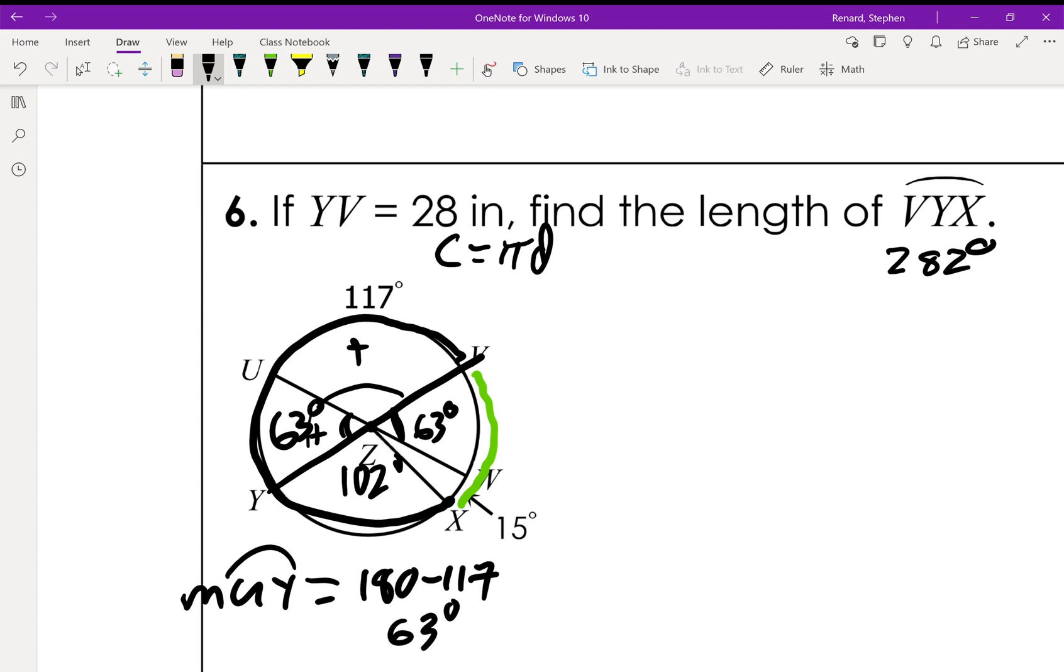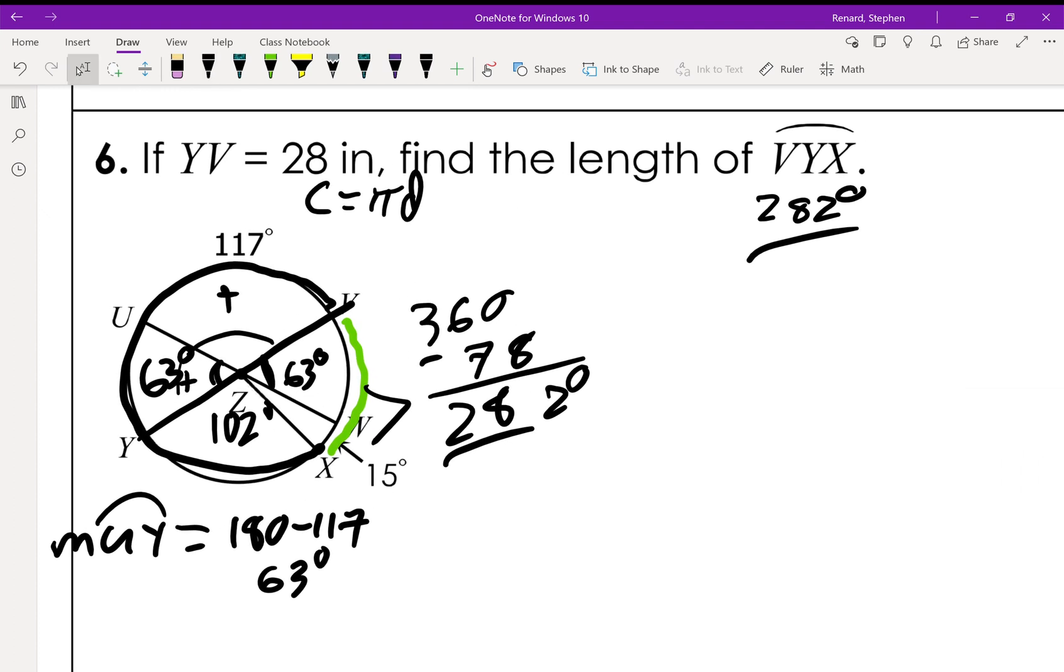Now, the other way we can do it is we know that these two together, 63 and 15, that's 78. We can go 360 minus 78 and get 282 degrees. Whichever way makes more sense to you. Same thing. So it really doesn't matter which way you go. So what are we going to do? We're going to go π times the diameter, 28 inches, and that's going to give us the total circumference. And we're going to multiply that by the portion of the circle we're talking about. In this case, 282 out of 360 degrees. Drop that into the calculator. 68.905, so we get 68.91 inches.